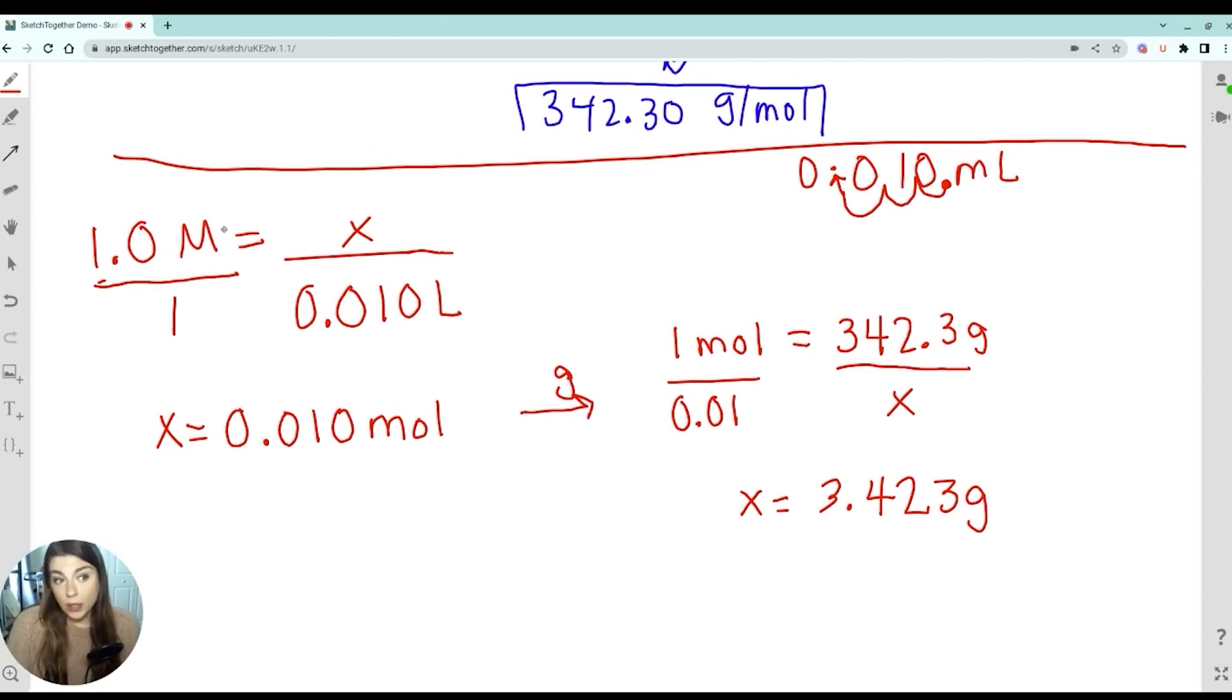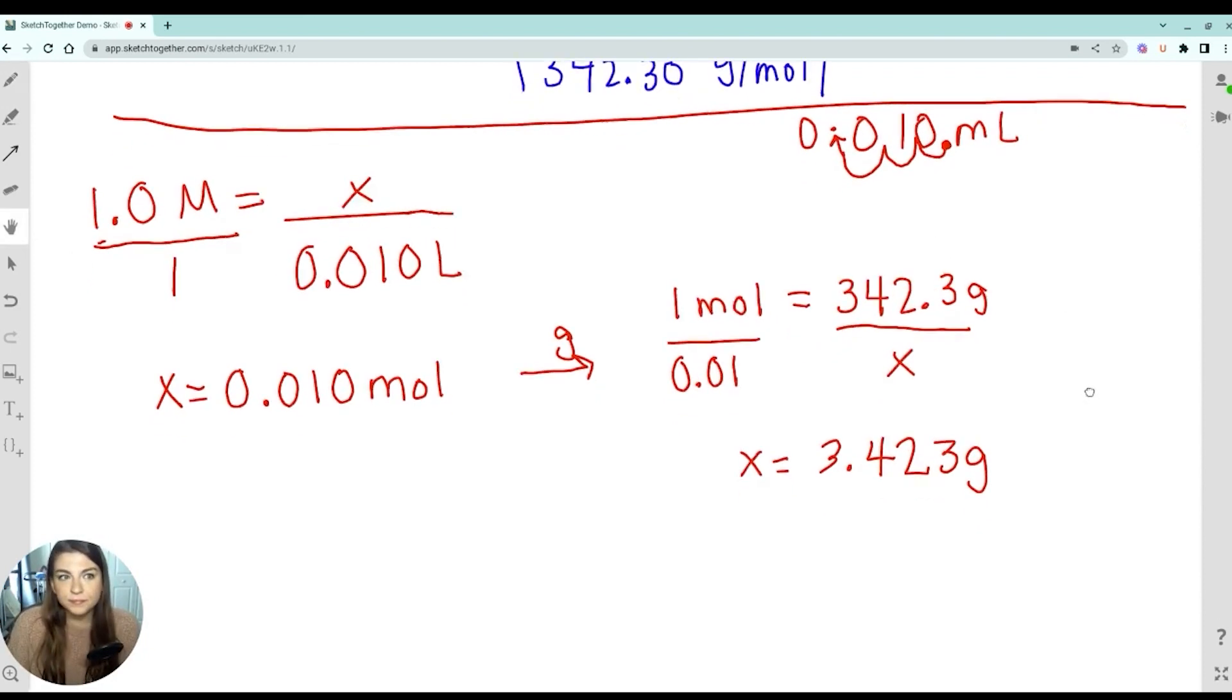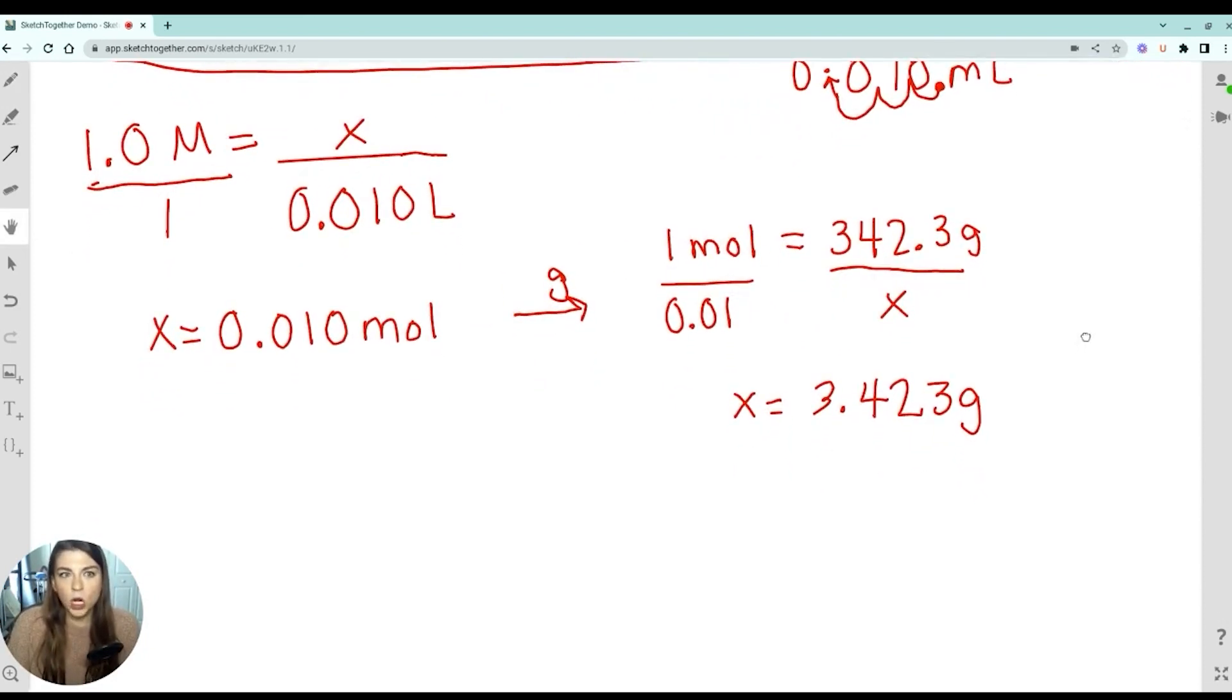And that is what I put on the balance in order to make my 1 molar solution. Now, what we could do is this same calculation for the half molar or the 0.5 molar and the 0.25 molar. That would be probably the most appropriate thing to do. So I'm going to do that right now. I'm going to switch over to blue so we can kind of distinguish here.